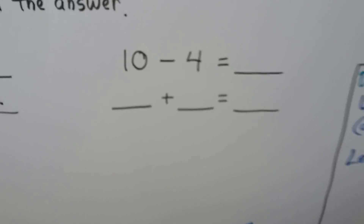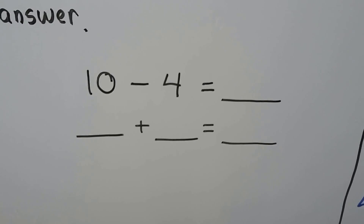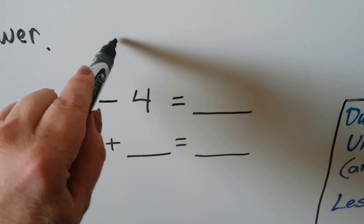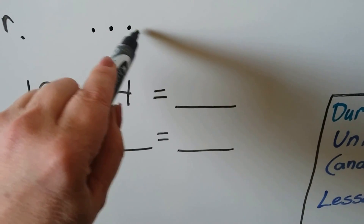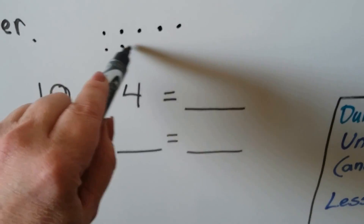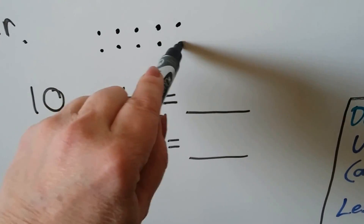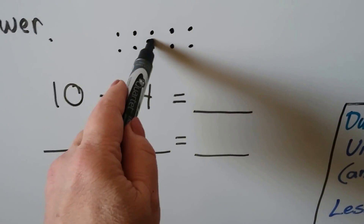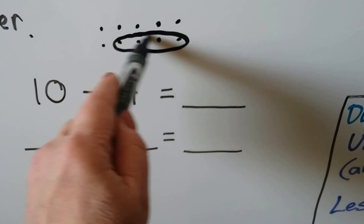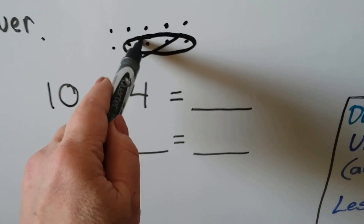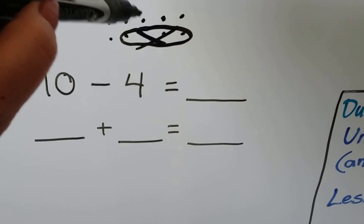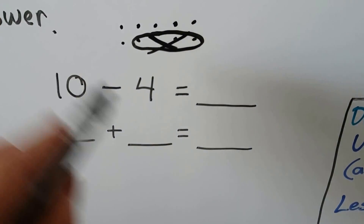Let's try this one: ten minus four. We make ten counters and take away four, leaving six.